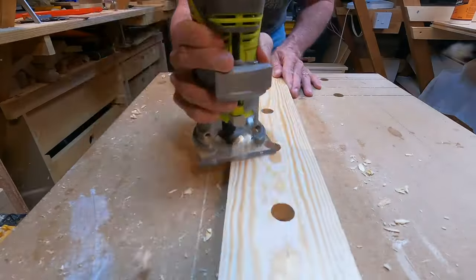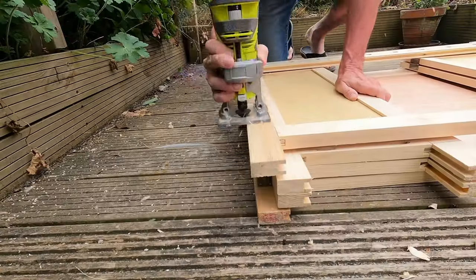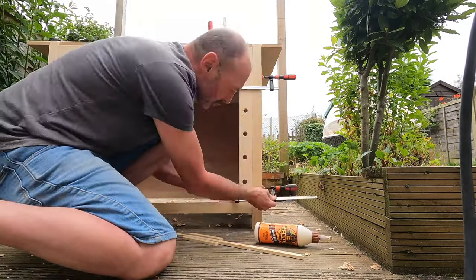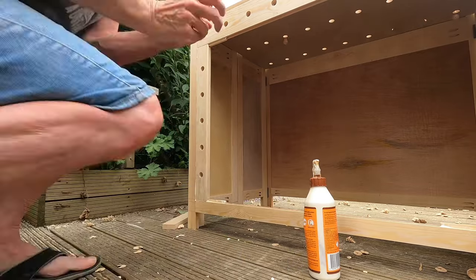I then turned my attention to making the front frame of additional 3x1-inch timber. If I'm totally honest with you, I made a mistake by putting the groove in the front of the frame, so here I got over the problem by loose tonguing these pieces.